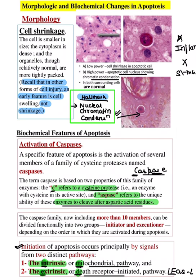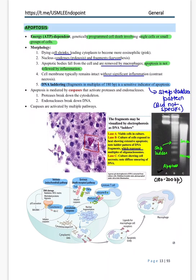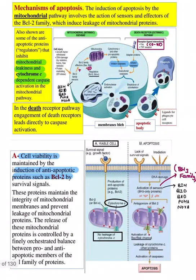In apoptosis: cell shrinks, pyknosis → karyorrhexis → karyolysis. Apoptotic bodies detach and are coated by macrophages — no inflammation because macrophages engulf them. The DNA laddering pattern in apoptosis shows a step-ladder pattern at classical 180–200 base pairs. The smearing pattern is seen in necrosis.